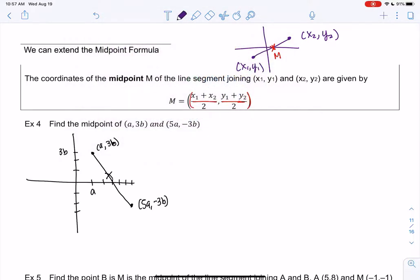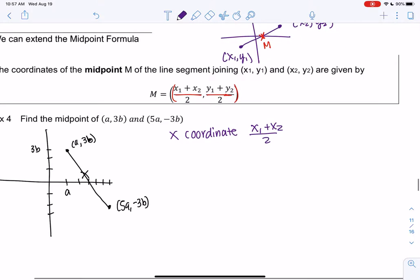So the x-coordinate will be x1 plus x2 all over 2. It's the average of them halfway in between, which will be a plus 5a all over 2, so 6a over 2, or 3a. So my picture is maybe not to scale, but that's okay.